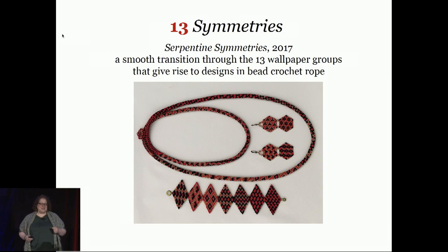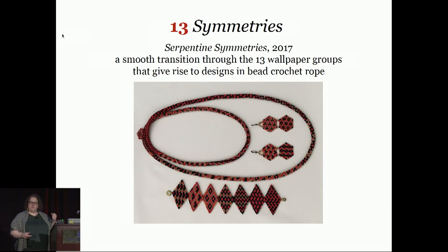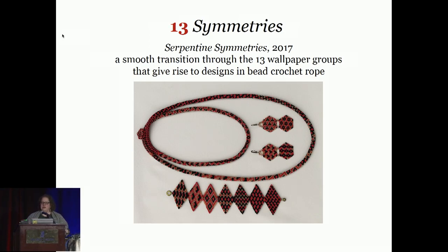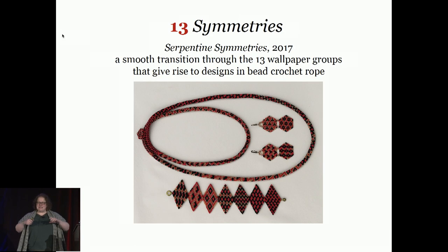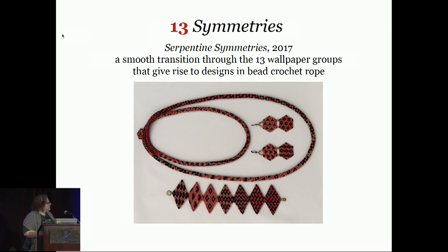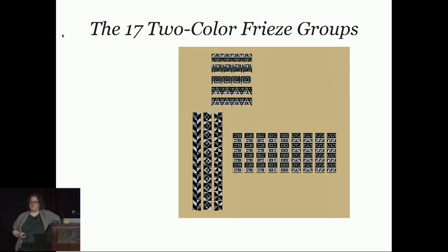That was great because it was G4G13. Lately I've been doing some work with a colleague, Carolyn Yackel. She and I were both really interested in a particular form of knitting called mosaic knitting. It's very nice — it's like two-color knitting, but it's not as fiddly as other forms of two-color knitting. You only have to work with one color at a time, so it's very popular. But the rules for what it can do are a little bit weird. So we decided to look at this in particular in the setting of the two-color freeze groups.